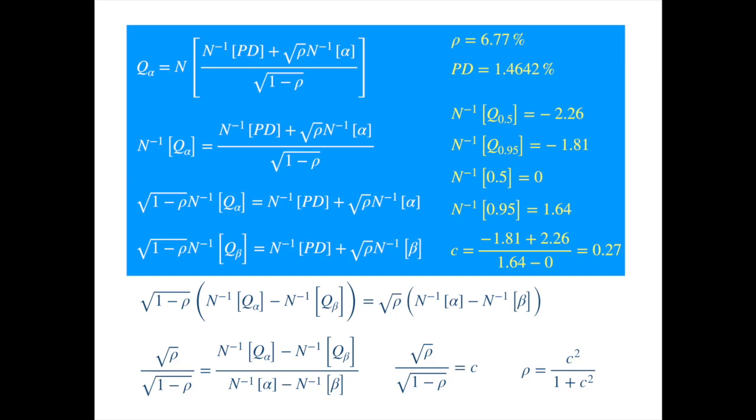And now we can plug the c into the rho formulae to get the correlation parameter. And once we know that, then it is easy to calculate the PD by plugging the correlation and the given quantile into either of the quantile formulae.